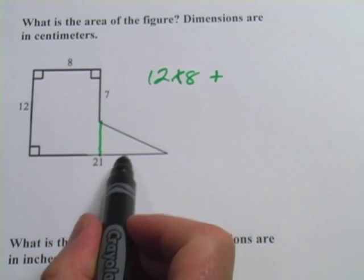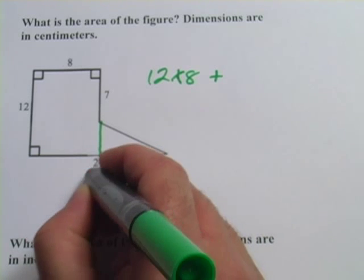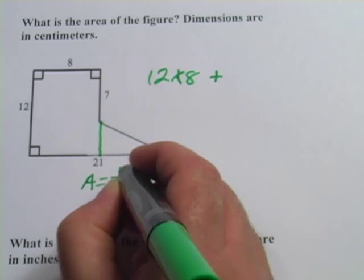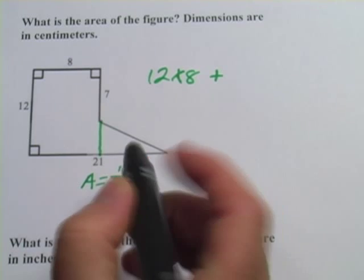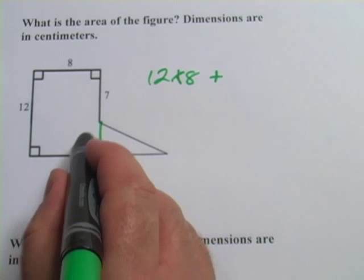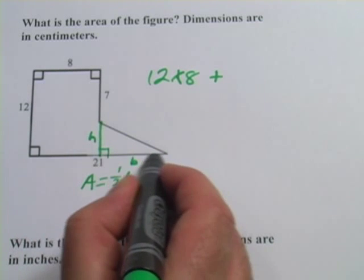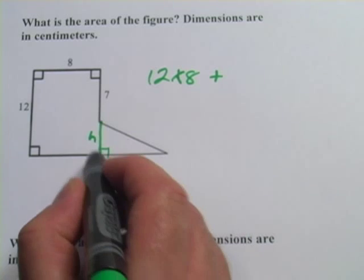That one's a little bit trickier. Remember, the formula for the area of a triangle is area equals 1 half base times height. This is a right triangle, so the height is going to be here, and the base is going to be down here, so we need to figure out what this base side is and what this height is.